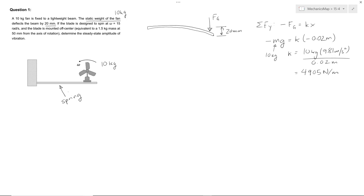Now we can also find the natural frequency of this system. We've got a mass, which is the fan, and we've got a spring, which is the beam. So our natural frequency,